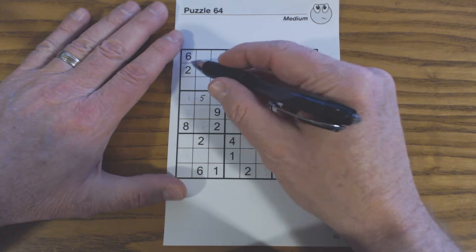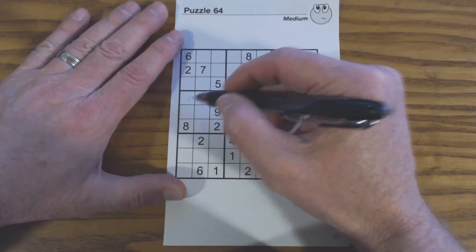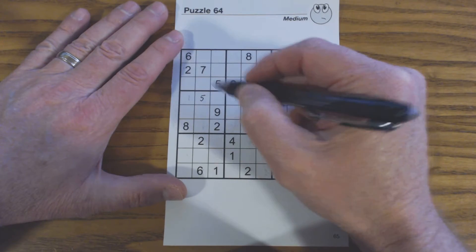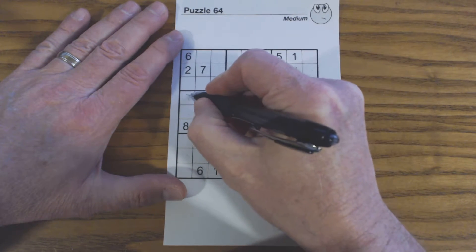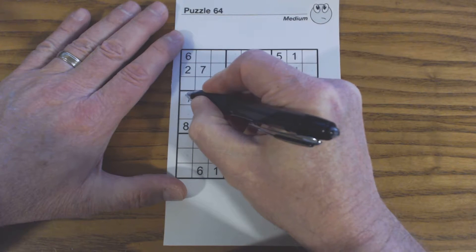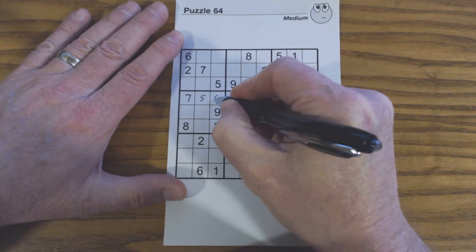Okay, and then we can fill in the other two numbers, because now we just need a 6 and a 7 here. And there's a 6 there, so that's a 7. And the 6 goes there.